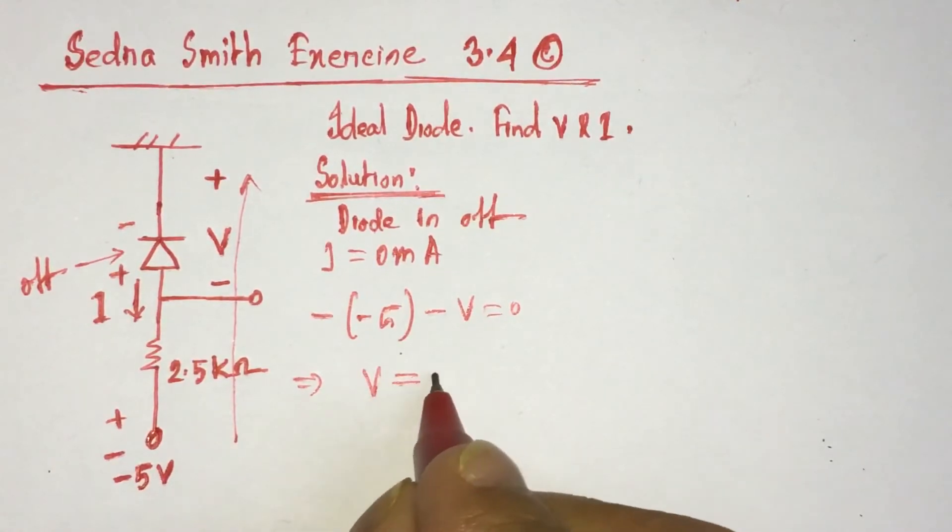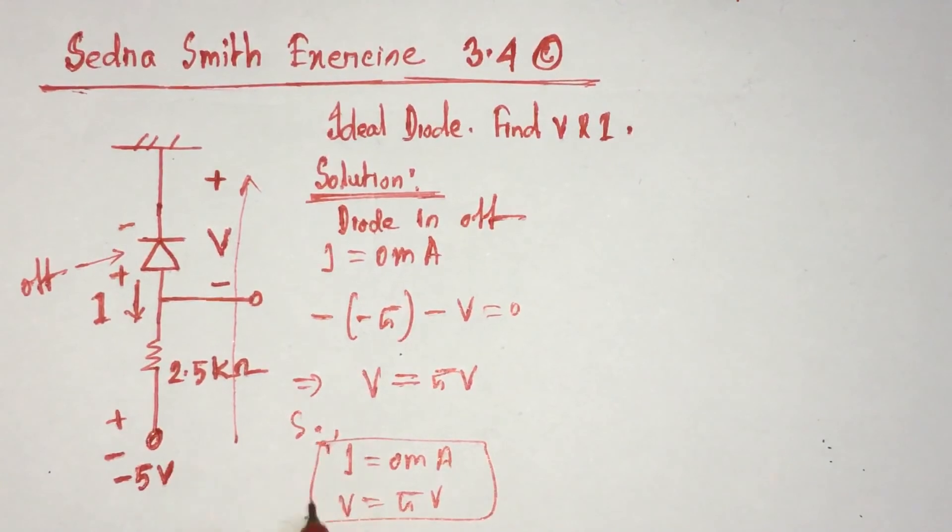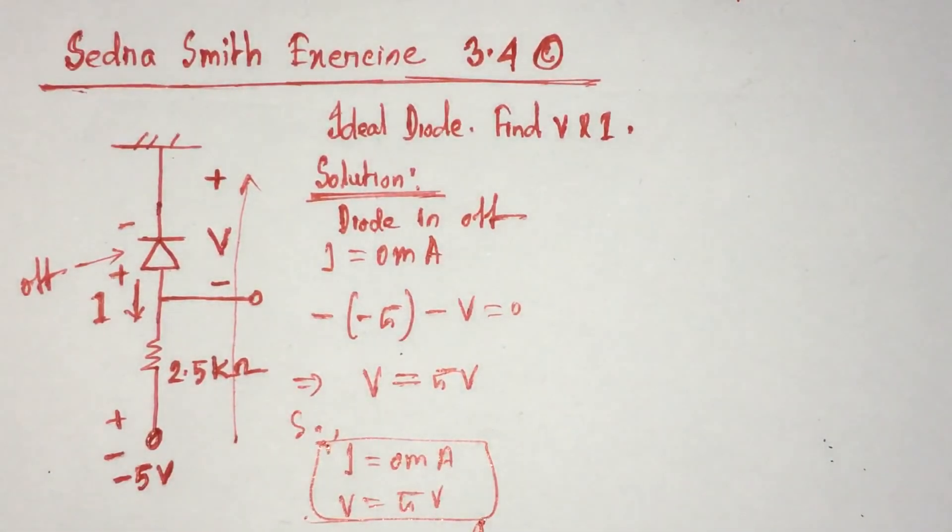So I equals zero milliamperes, V equals five volts. These are the answers. Thanks.